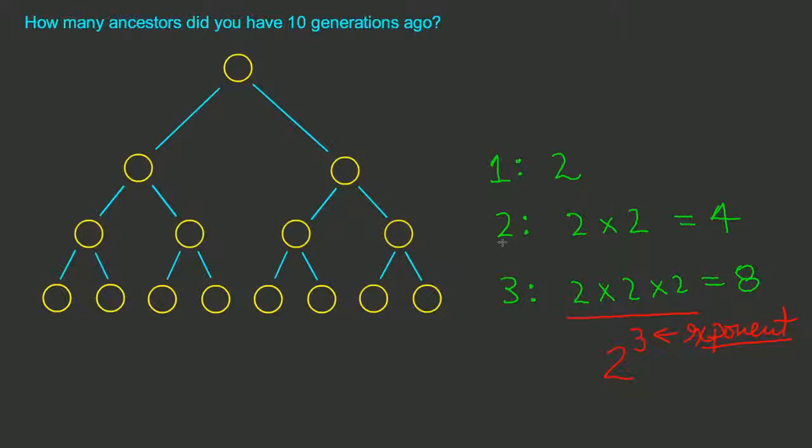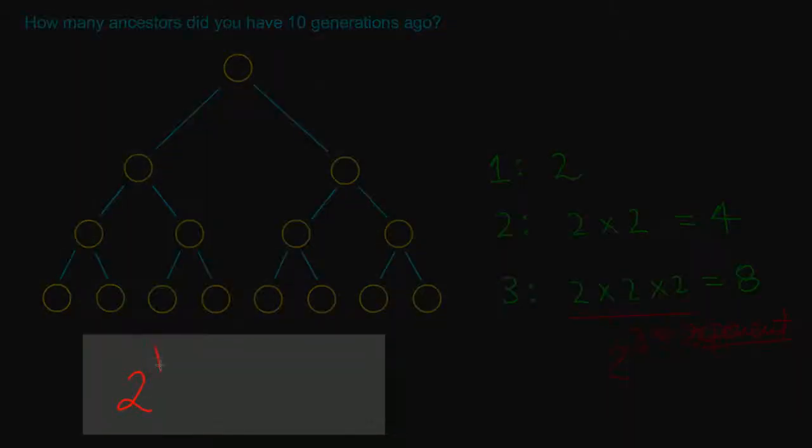If we take a look back at the second generation, it was two with itself twice. And in the first generation, two with itself once. So it seems reasonable to say that if we want to go back 10 generations, we would have to calculate two raised to the exponent 10. And once again, that's not two times 10, but that's two multiplied with itself 10 times.